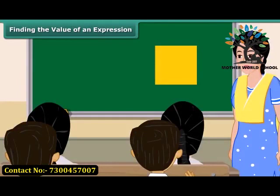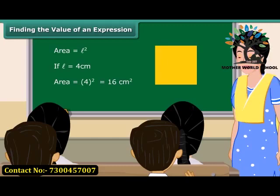See this square? It has an area equal to L square. If the value of L is equal to 4 cm, then what would be the area of this square? That's right! It would be 16 cm square. So, children, there are a number of situations in which we need to find the value of an expression.